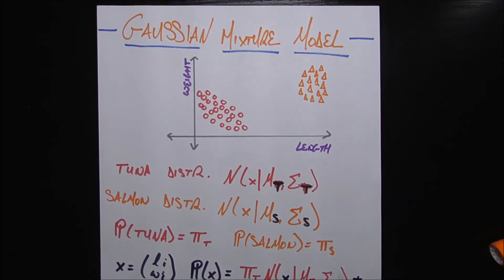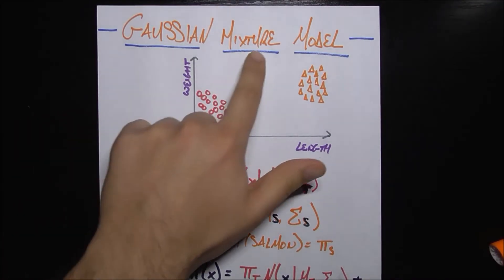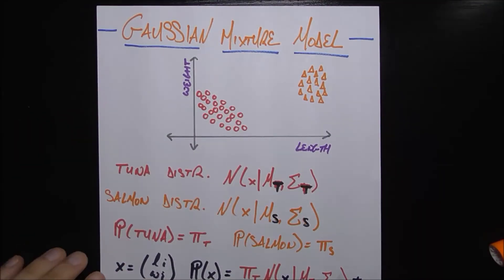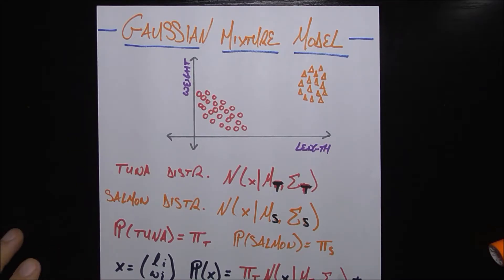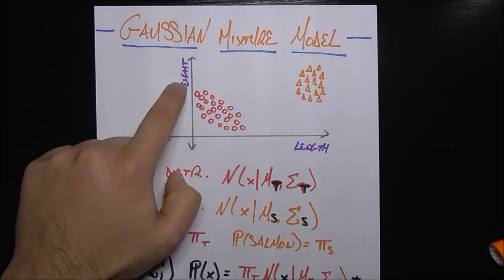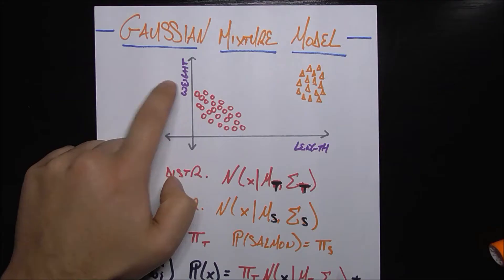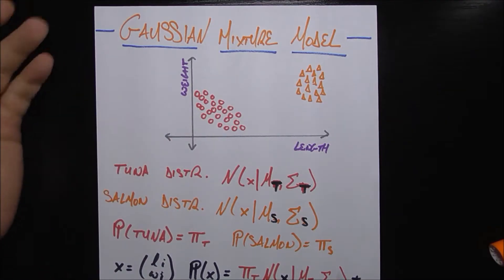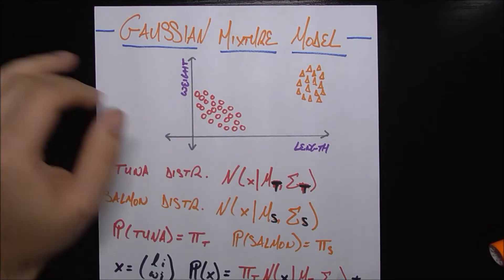In this video, we'll be looking at a machine learning model called the Gaussian mixture model. It seems like a pretty scary string of words, but it's not that tough. We're going to be using the same framework that we used in previous machine learning model videos, where we have the length and weight of a fish, and we're trying to determine whether it's a tuna or a salmon.